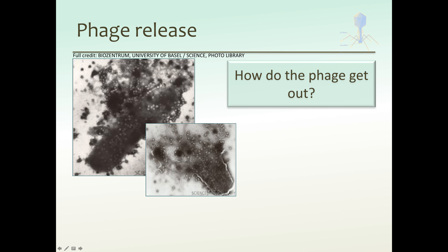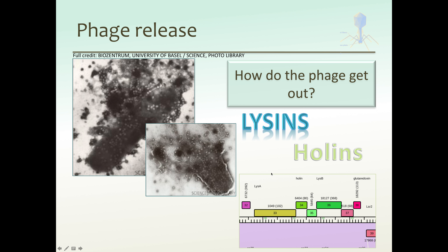Those virions are released from the cell. Here's a cell releasing tons of phage progeny due to the production of enzymes called lysins, and also a transmembrane protein called the holin, which pokes lots of holes in the cell membrane to let the lysins out of the cell and give them access to the peptidoglycan. These are the genes in the lysis cassette that include lysin A and lysin B, with the holin usually right in between. In this case there's a fourth gene in the lysis cassette. These are genes you'll want to look for in your genome — they're usually grouped together.